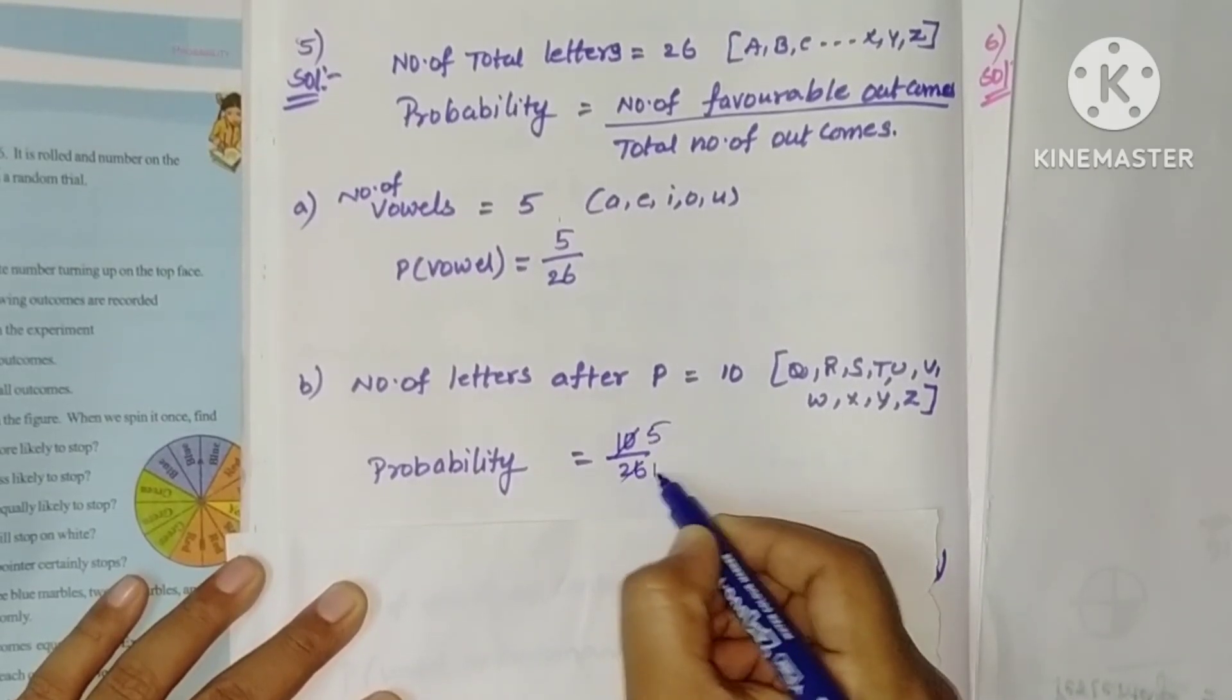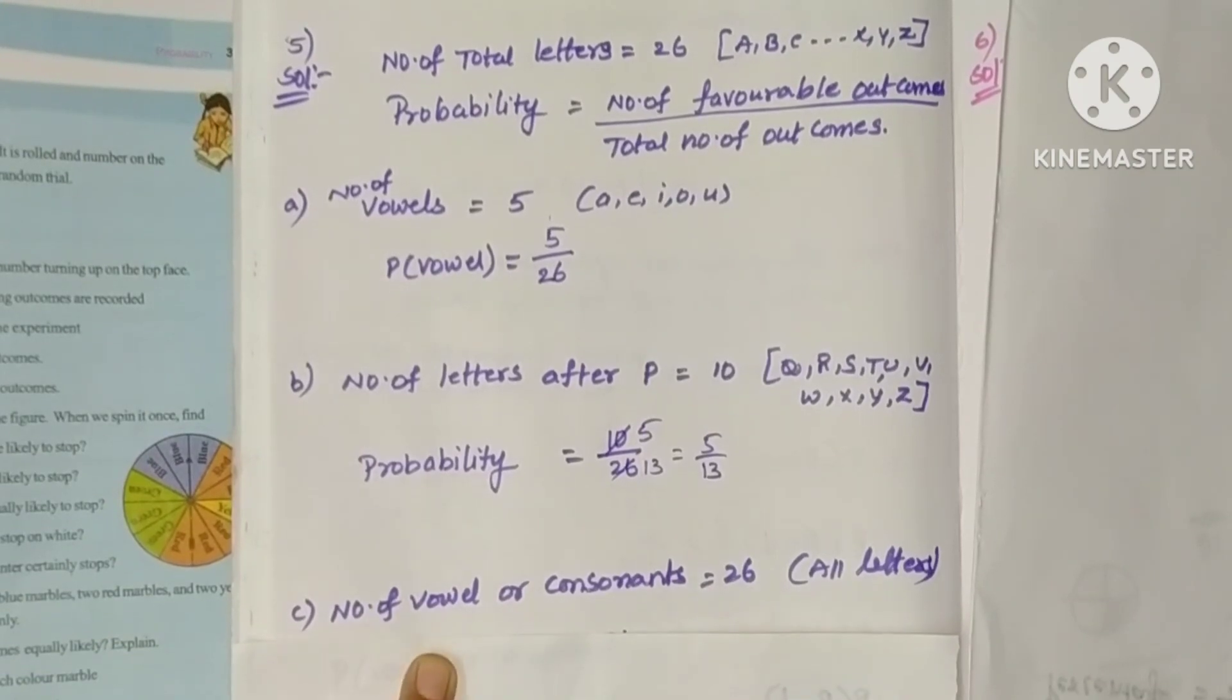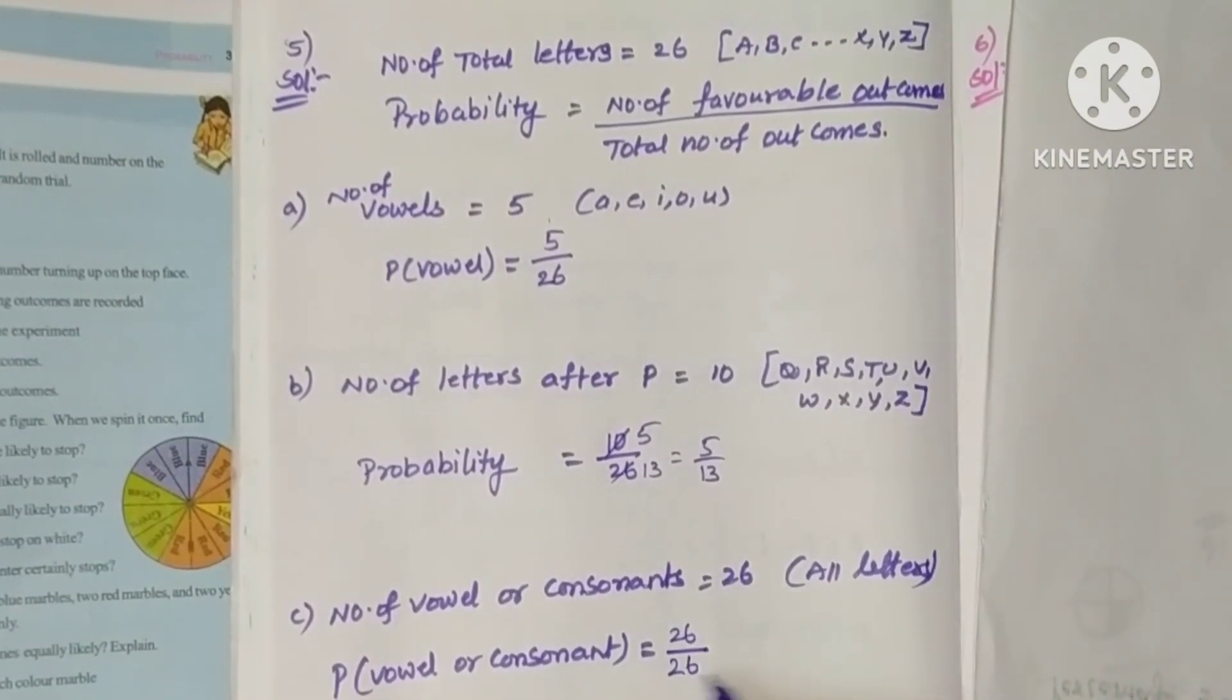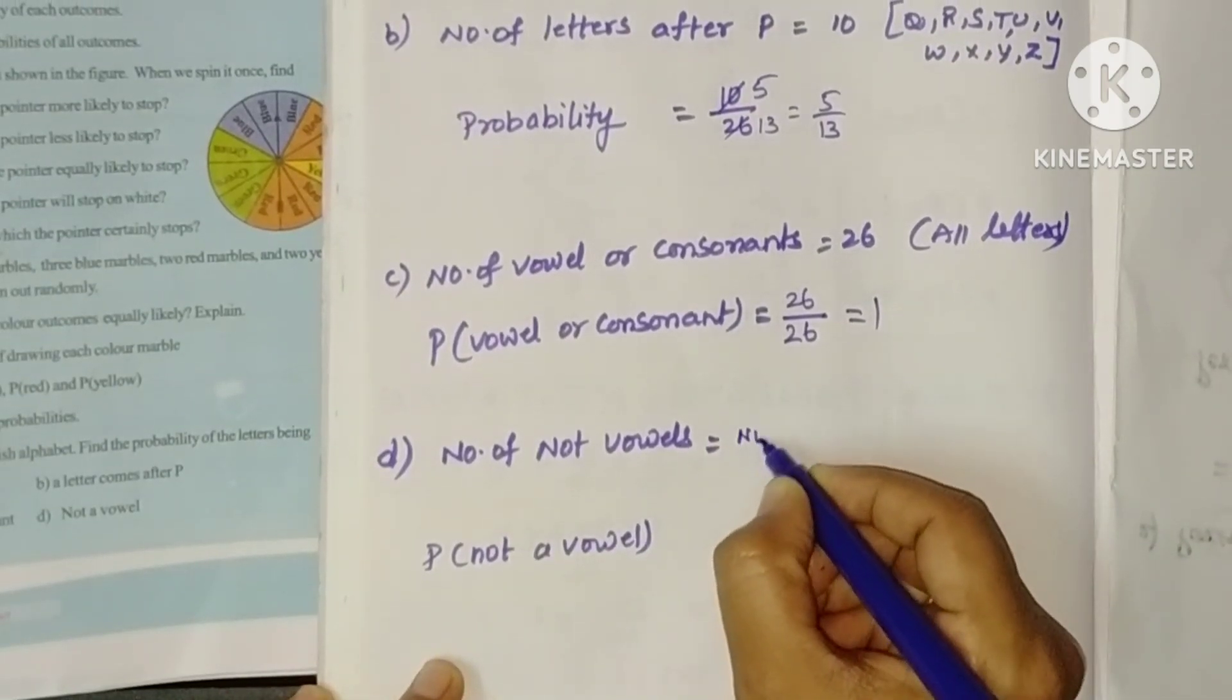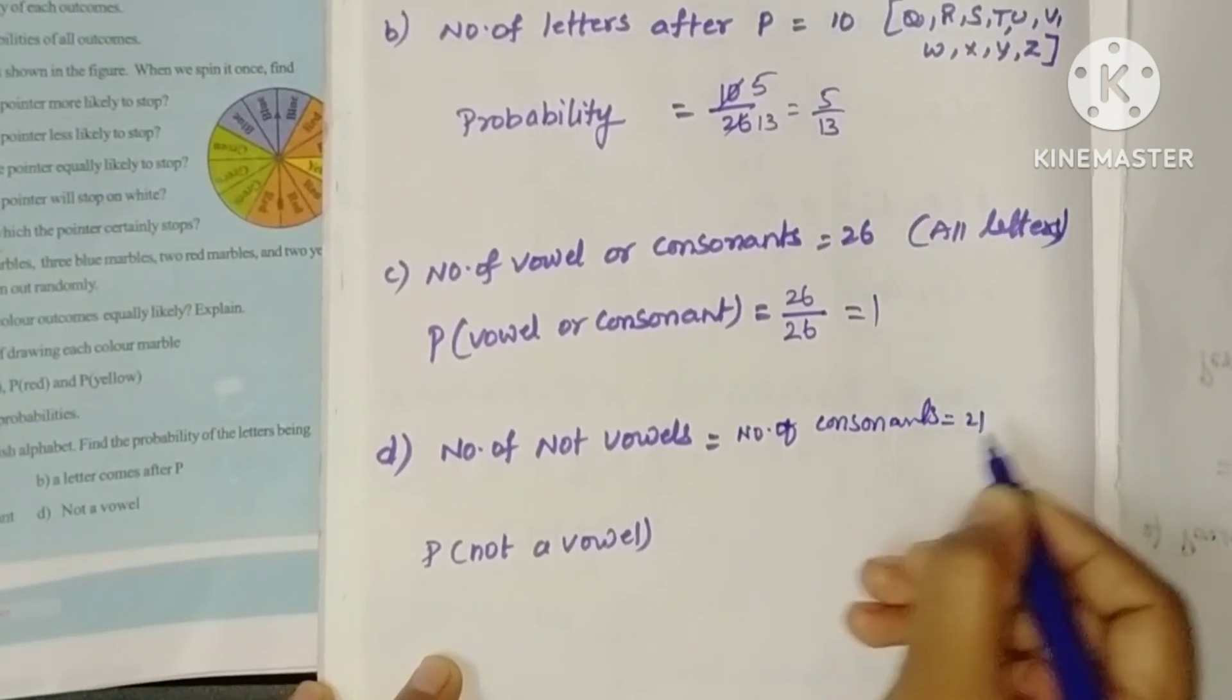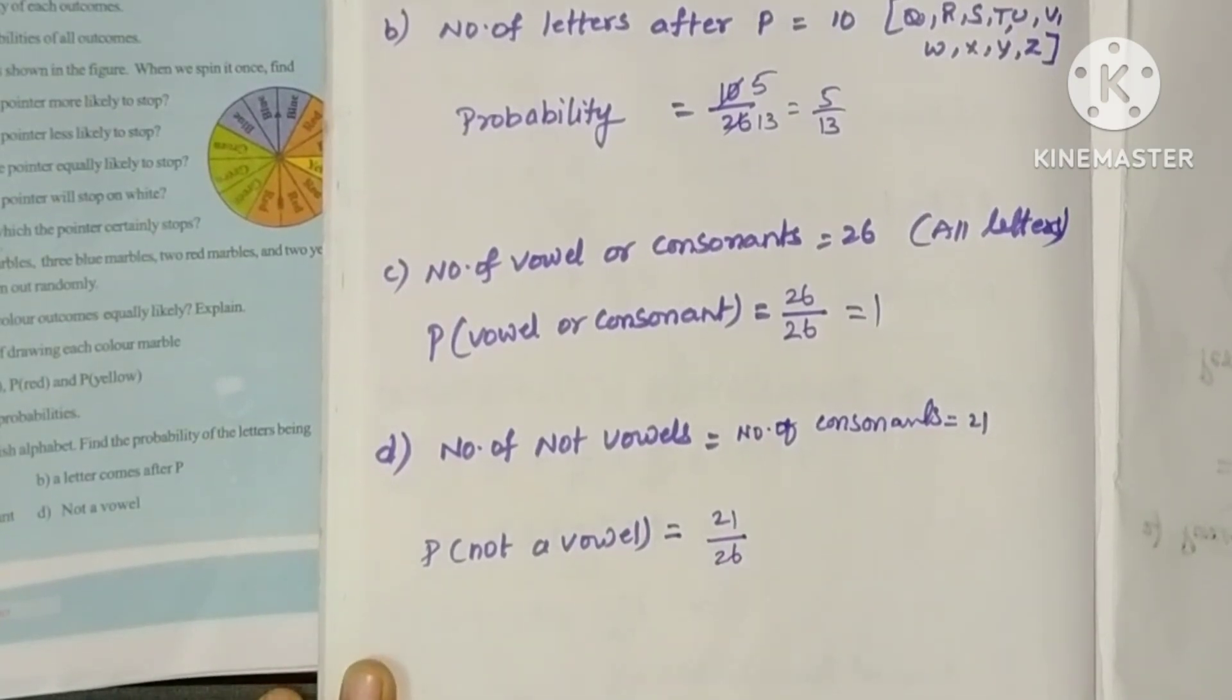It's 5 by 13. Next, vowel or consonant: number of vowels or consonants is all letters, that is 26. So probability of vowel or consonant is 26 by 26, which equals 1. Next, number of not vowels means number of consonants only, which is 21. So probability of not vowel is 21 by 26.